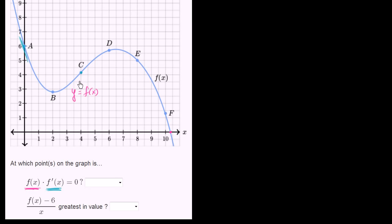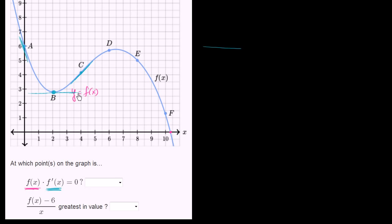Similarly, f prime of x when x equals 4 is the slope of the tangent line there — it's going to be a positive value. So looking at all of these, where is the slope of the tangent line 0? A zero slope looks like a horizontal line. The only point that jumps out is point B right over here — the slope of the tangent line looks like it would indeed be horizontal.